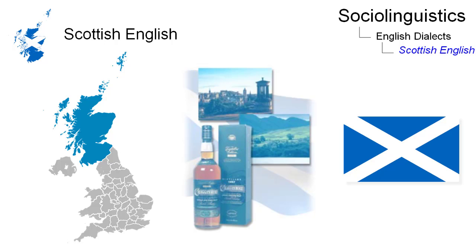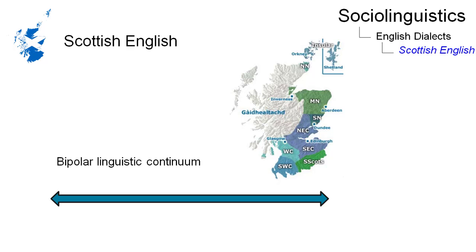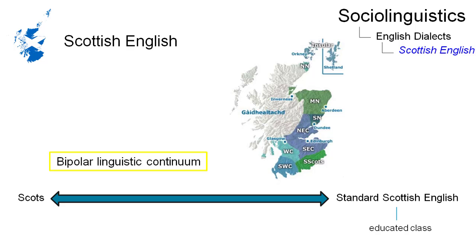Scottish English is a broad notion for the varieties of the English language spoken in Scotland. It can be described as a bipolar linguistic continuum with broad Scots at one end and standard Scottish English at the other. The formal variety spoken by educated Scots is referred to as standard Scottish English. It is not to be confused with Scots, which is usually spoken by the working class.